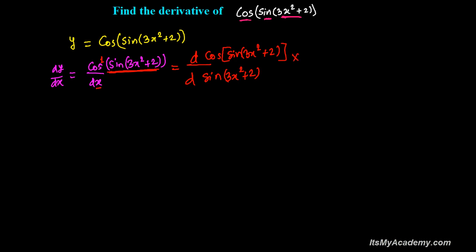Since I have applied the chain rule from my side, I have to multiply with the same thing: sine 3x squared plus 2. Now sine has power 1, so we have to differentiate again with the angle of sine, and that angle is 3x squared plus 2. So we differentiate with respect to 3x squared plus 2.